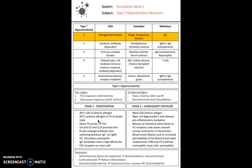The T helper cell then primes itself — it becomes a T helper 2 cell under the help of interleukins. B cells also undergo antibody class switching; antibodies normally produced are IgM, but sensitization causes more IgE to be produced. Interleukin also stimulates eosinophils to gather and become active, and IgE antibodies have a higher affinity for FCE receptors on mast cells, meaning IgE binds to these receptors. That's essentially the first sensitization — quite a simple process with minor symptoms.